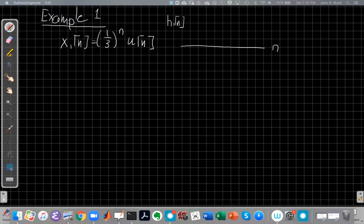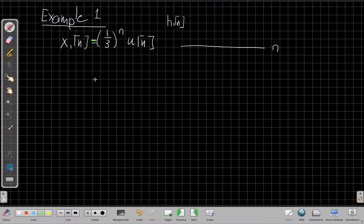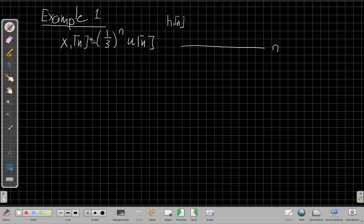Okay, so switching over to the whiteboard, the first example is one that should look very familiar, a signal of the kind we've seen already. We'll call this x₁ of n. For example 1, x₁(n) = (1/3)ⁿ u[n].